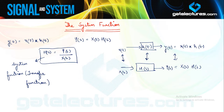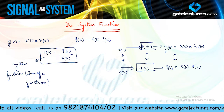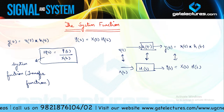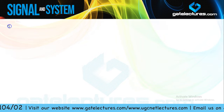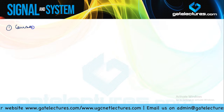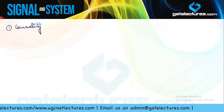Let us look at the characterization of the LTI system now — how we are going to define different properties of the system using H(s). The first property we look at is causality. How can we talk about causality using H(s)?